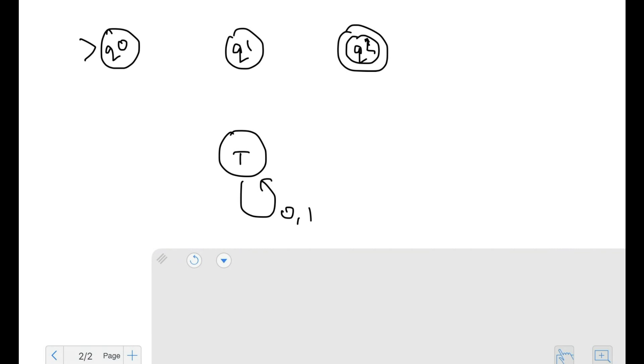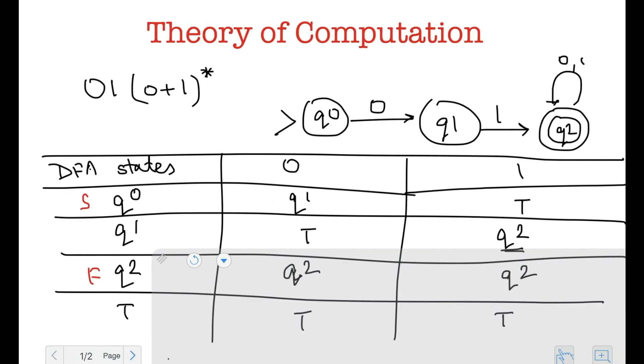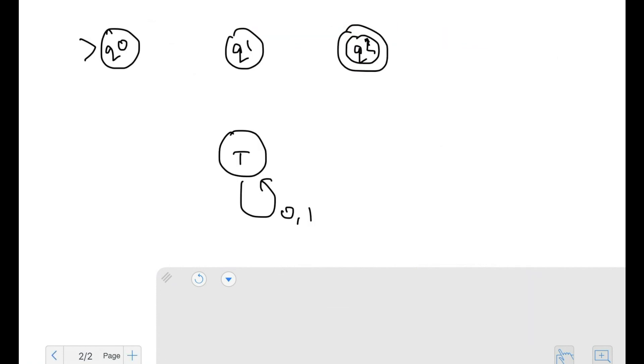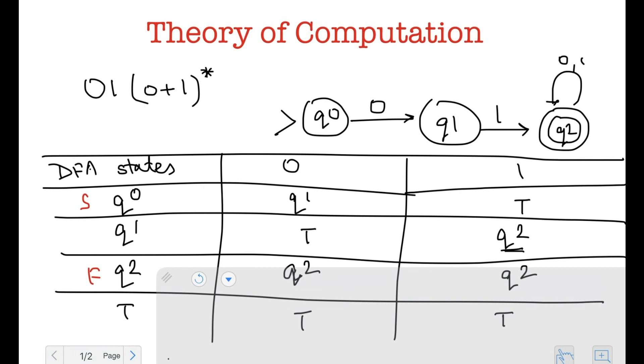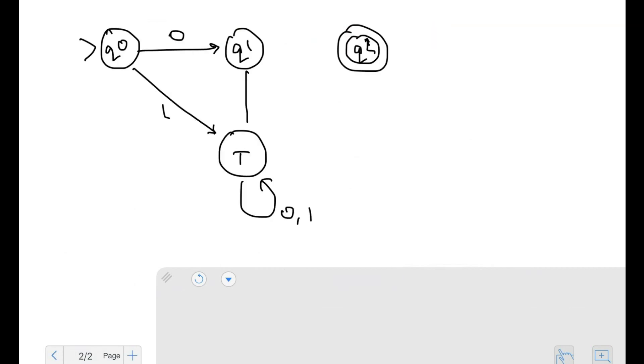And now let's look at the rest of the transitions. So from Q0, I go to Q1 on zero and I go to the trap state on one. And from Q1, I go to the trap state on zero and Q2 on one. And from Q2, I just loop to Q2 on zero as well as one.